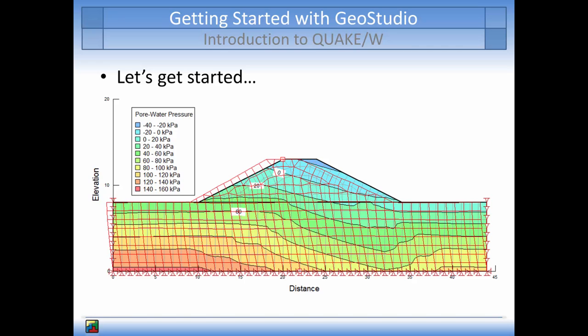This example will include two analyses. The first will be an initial static stress analysis to determine the stress state conditions that exist prior to the earthquake. The second analysis will simulate the dynamic response of the embankment during an earthquake event. The objective of this tutorial is to analyze the dynamic response of a loose soil deposit in terms of the motion that will occur at the crest of the embankment during an earthquake event, and to estimate the excess pore water pressures that may develop in a loose foundation soil.